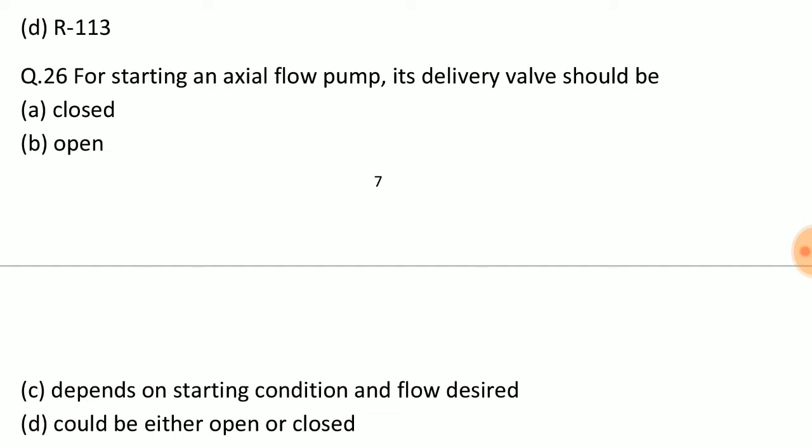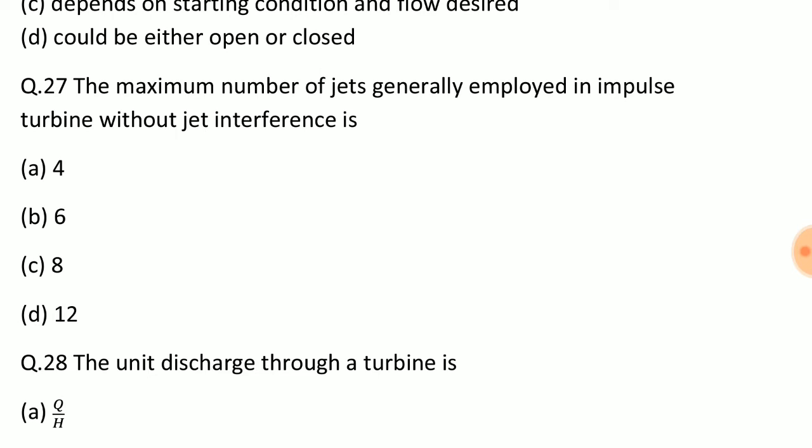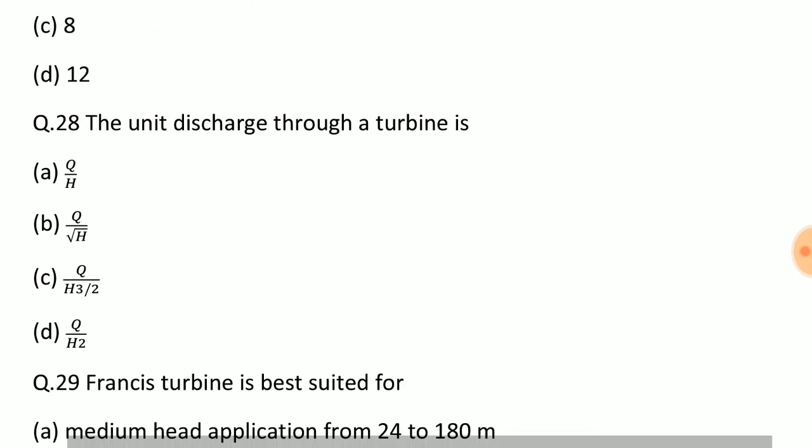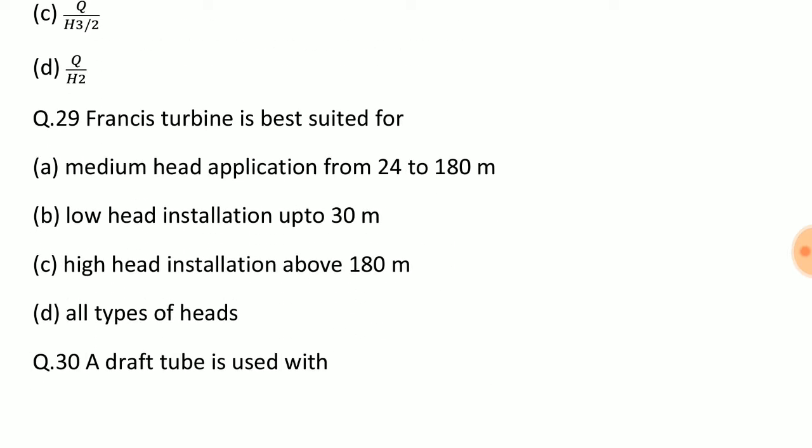Question: For starting an axial flow pump, its delivery valve should be? Answer: Option B, open. Question: The maximum number of jets generally employed in impulse turbine without jet interference is? Answer: Option B. Question: The unit discharge through a turbine is? Answer: Option B, Q upon root H. Question: Francis turbine is best suited for? Answer: Option A, medium head application from 24 to 180 meter.